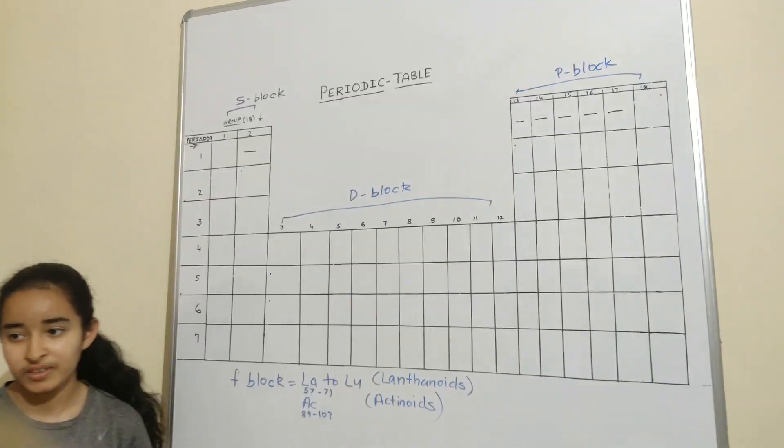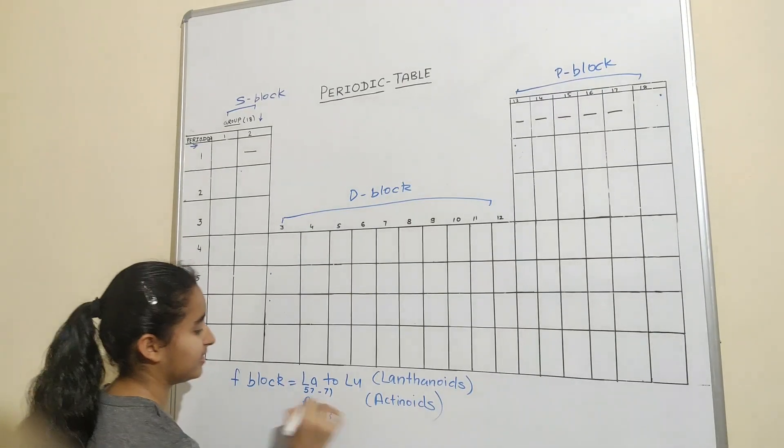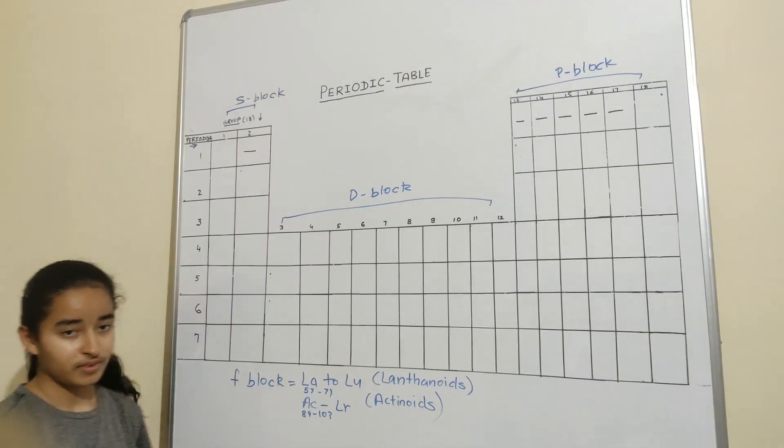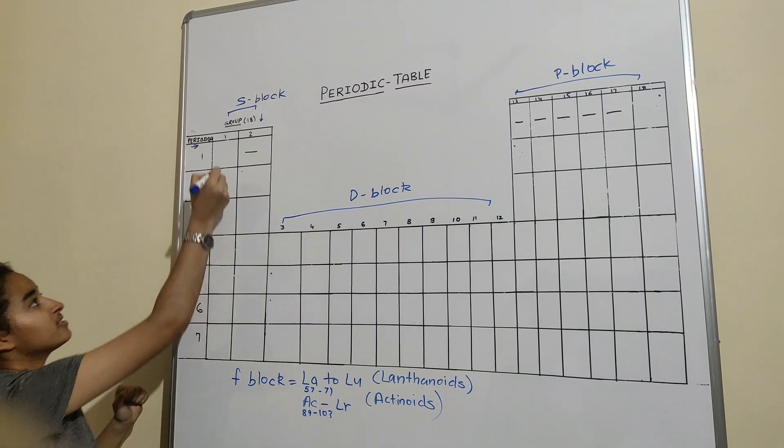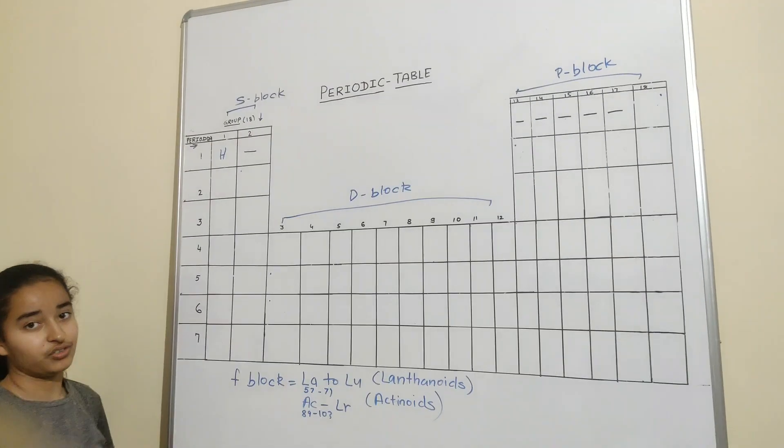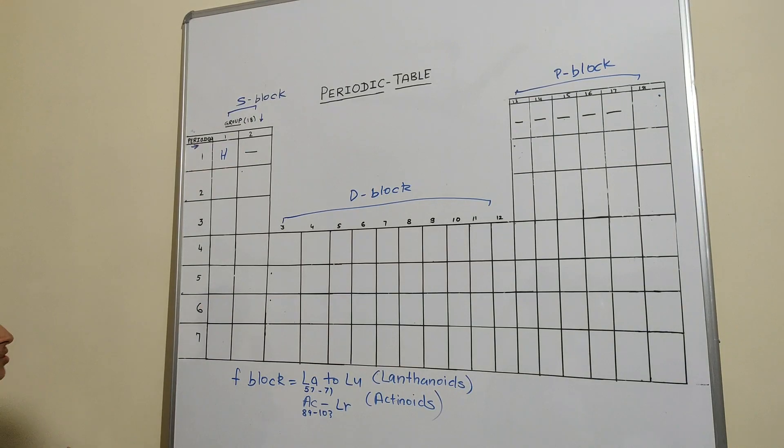Lanthanoids start from 57 till 71, and the actinoids start from 89 to 103. Ac ends with Lr. So let's begin with the S-block. The first element of the periodic table is H, that is hydrogen, and let's start the trick that I'm going to talk in this video.